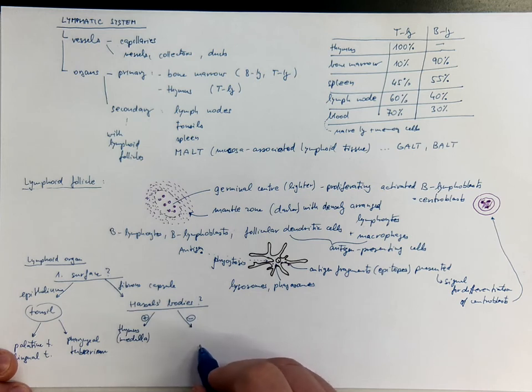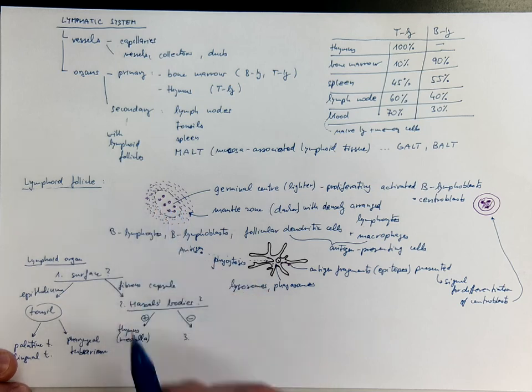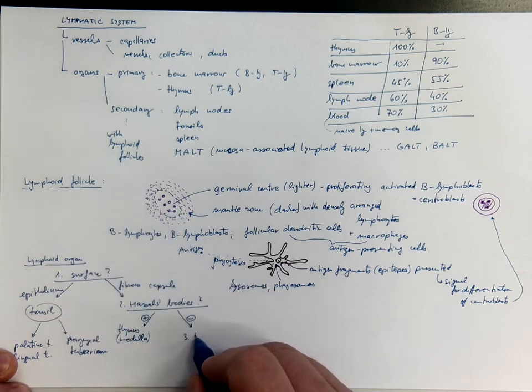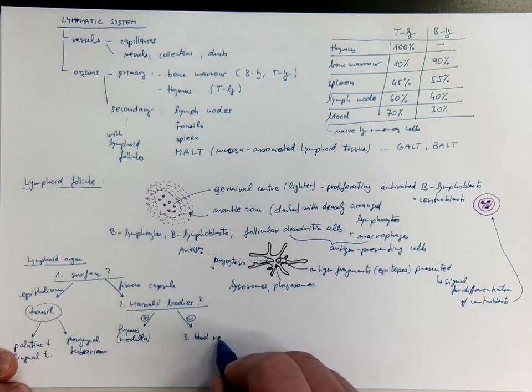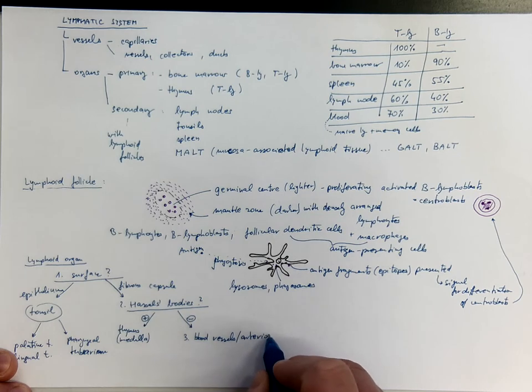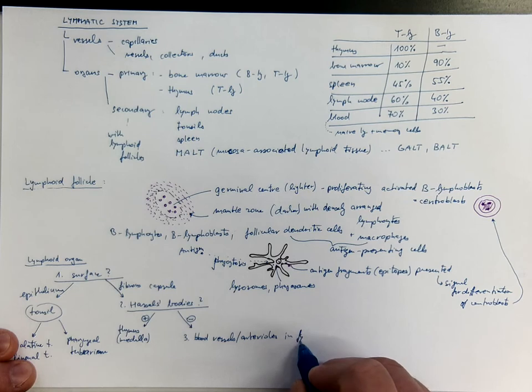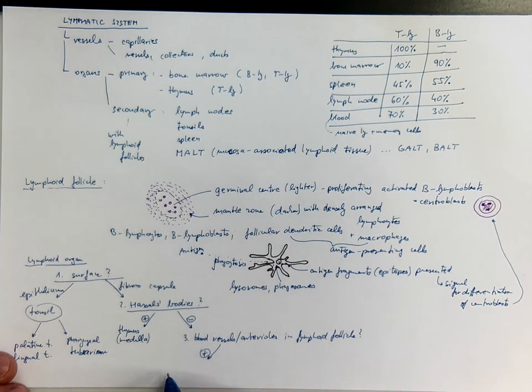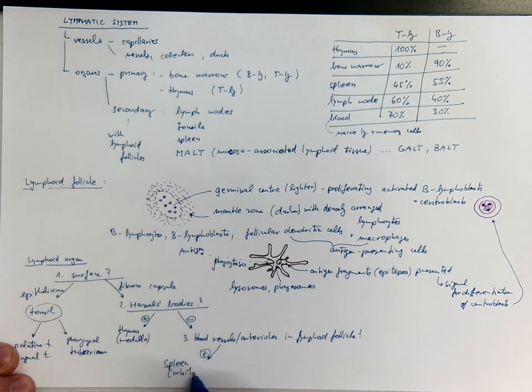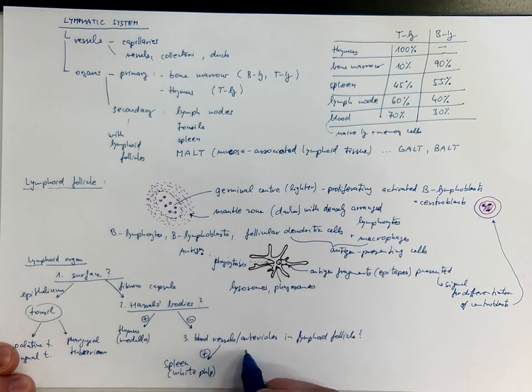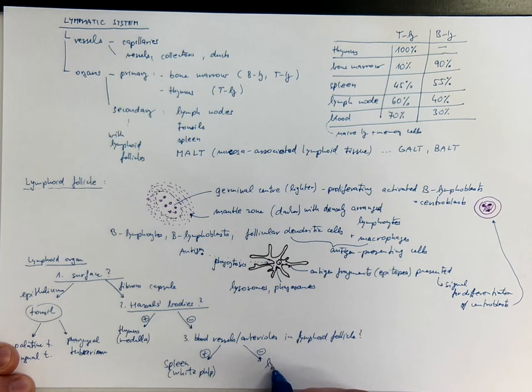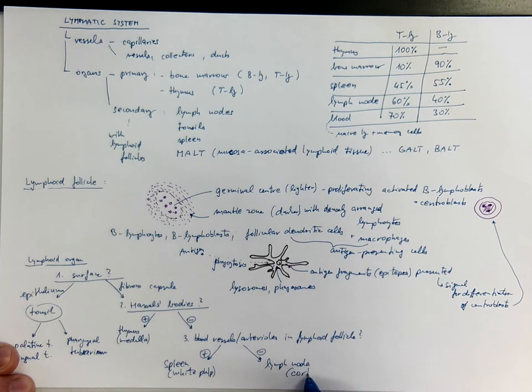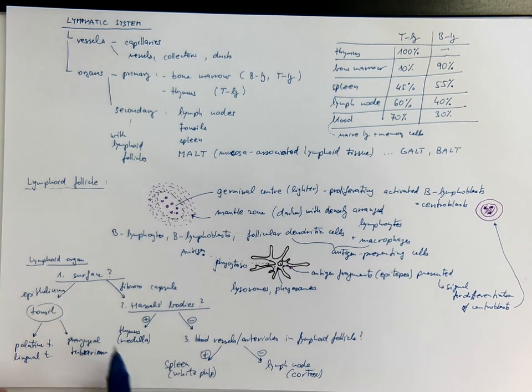And if there are no Hassall's bodies, you need to ask a third question, which would focus on the lymphoid follicles and the presence or absence of blood vessels. So are there blood vessels, arterioles in the lymphoid follicles? If so, this is typical for the follicles of the spleen, the white pulp of the spleen. And if there are no arterioles in lymphoid follicles, then you are most probably looking on the lymph node, mainly the cortex of it with the follicles. So this is the power of good questions.